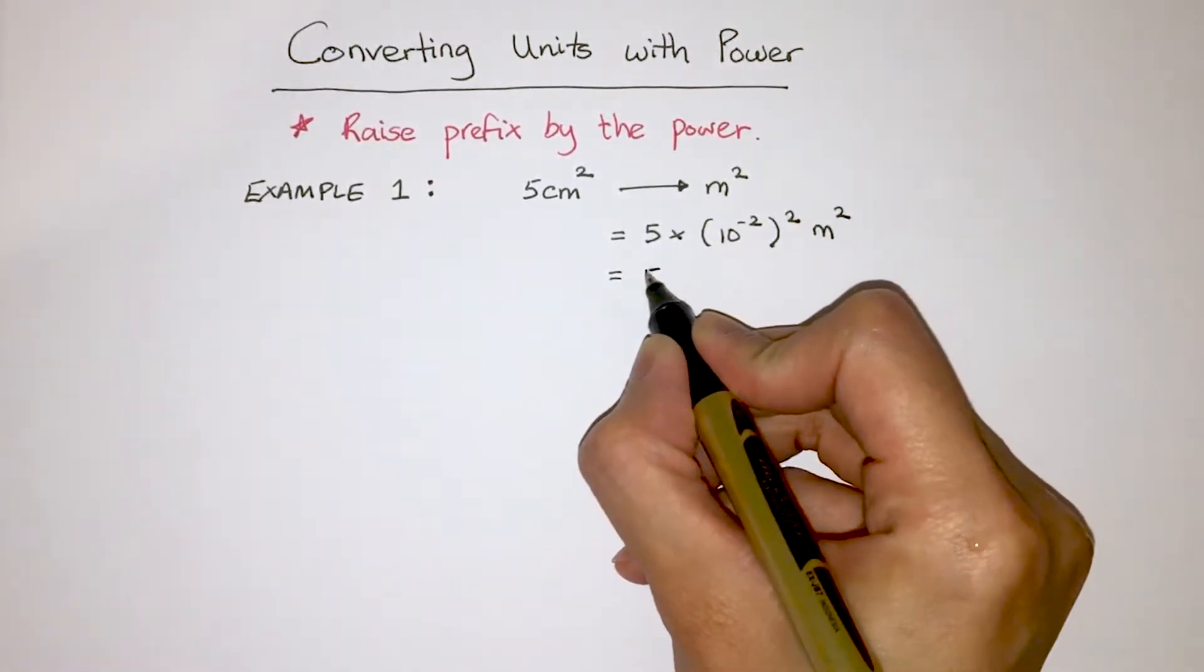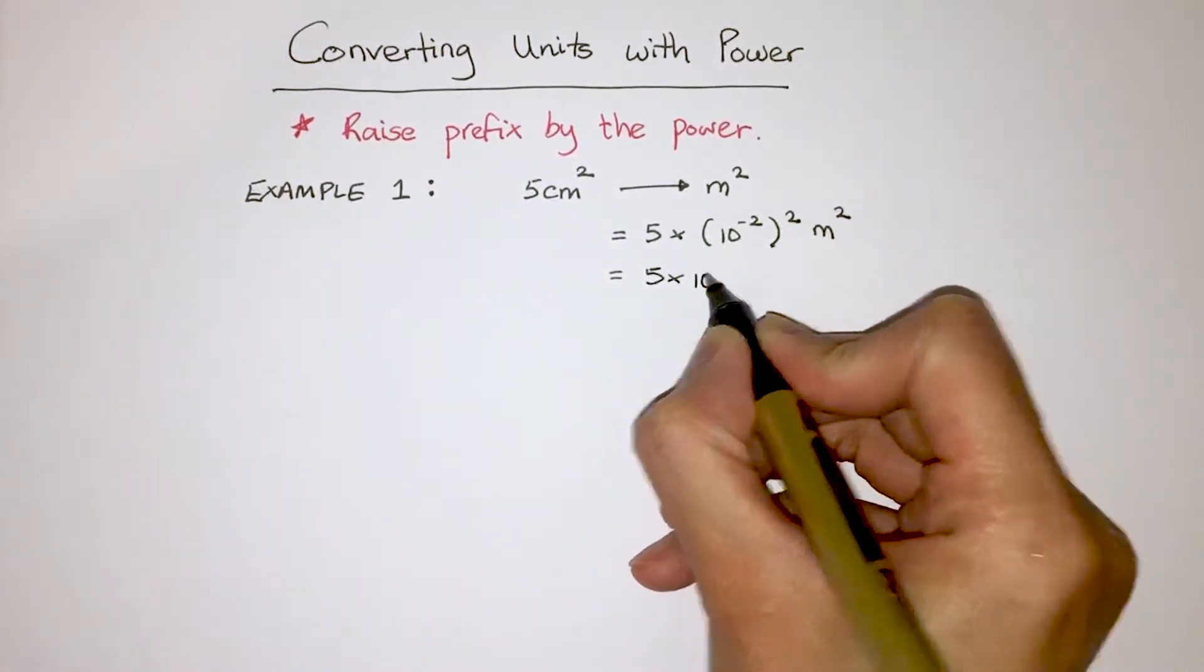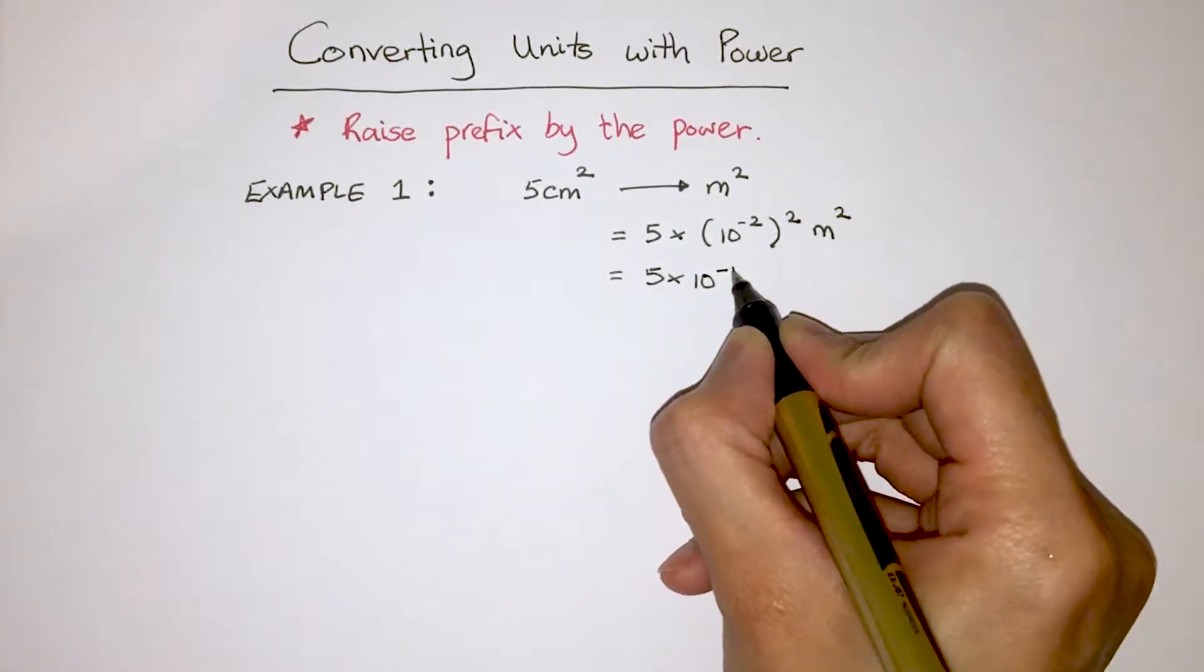So in this case, the powers, minus 2 and 2, they multiply together, they give you 10 to the power of minus 4.